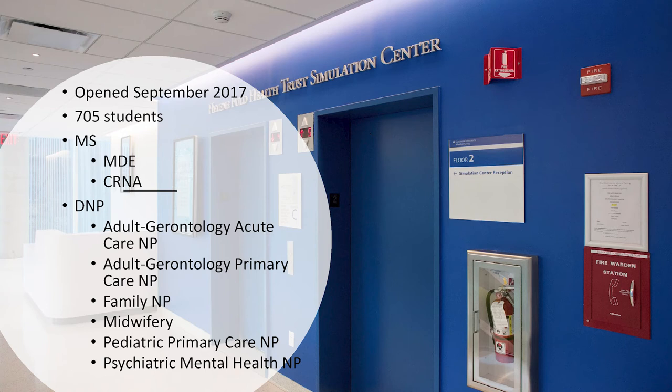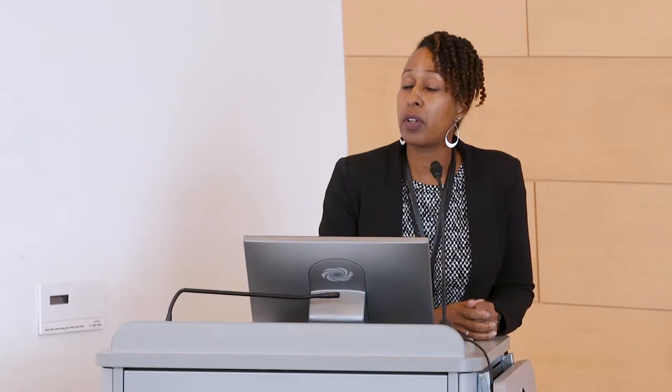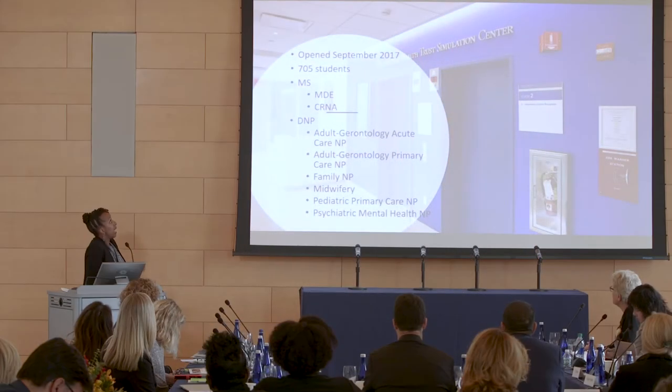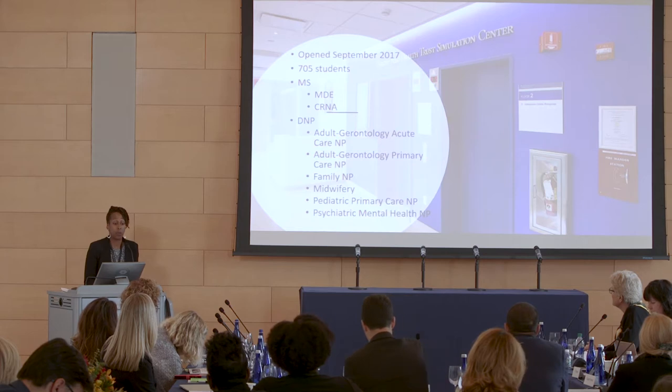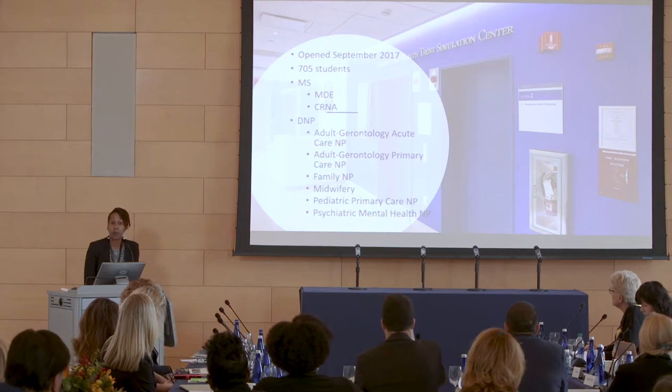We thought it might be a good idea to tell you a little bit about our simulation center. Here at Columbia, this is a brand new building — seven stories — and two of those floors are for our simulation center. Columbia has taken a lot of initiative and understands the importance of simulation. We just opened in September 2017 and we have over 700 students enrolled in our program. We have two master's programs — our CRNA and our master's direct entry — and we also have quite a few DNP programs.